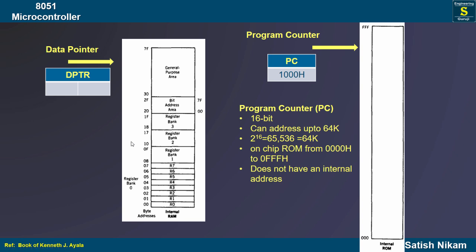The DPTR register is a special function register in the 8051 microcontroller that is used to indirectly access the data memory. The DPTR register is a 16-bit register which consists of two 8-bit registers: DPH, which is the data pointer higher byte, and DPL, which is the data pointer lower byte. Together they form a memory address that points to a location in the data memory where data is to be read from or written to.